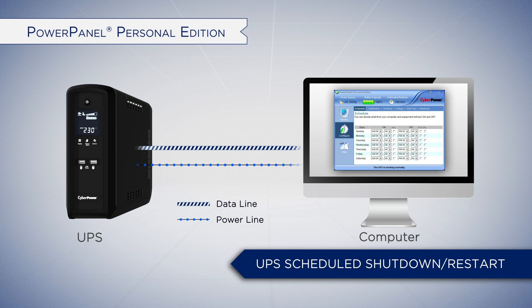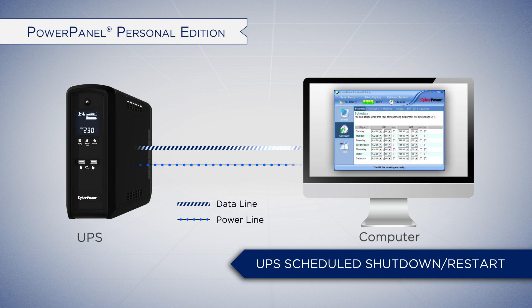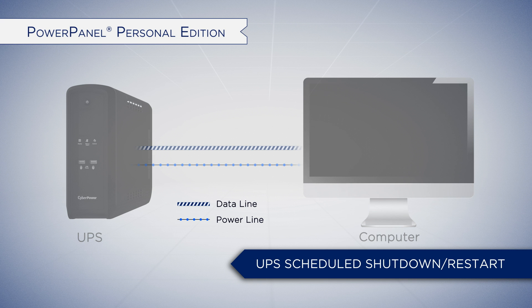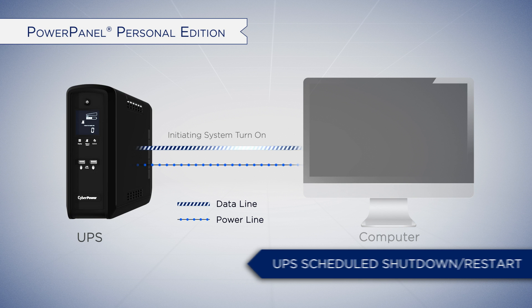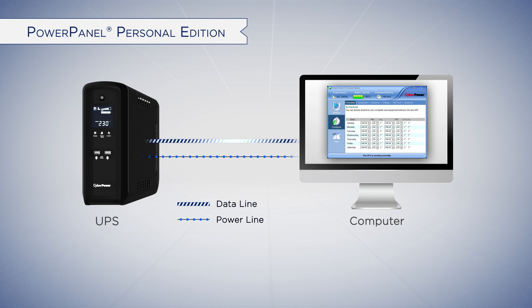By setting the designated turn off and turn on time, the software will initiate graceful unattended shutdown before the UPS cuts power, and then automatically wakes up the UPS to continue providing power to the connected electronics.